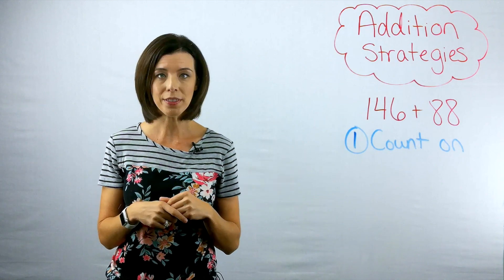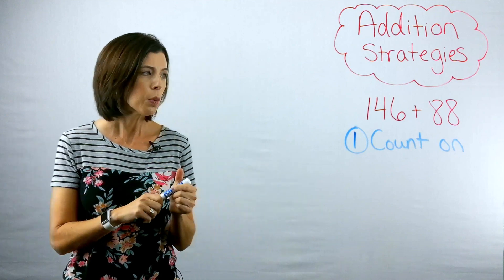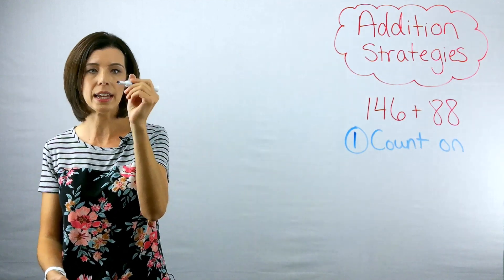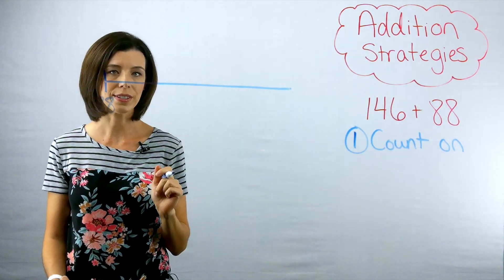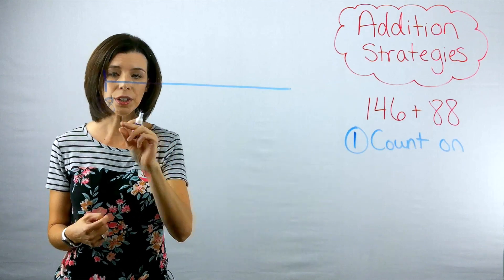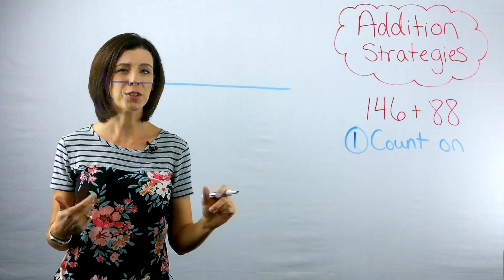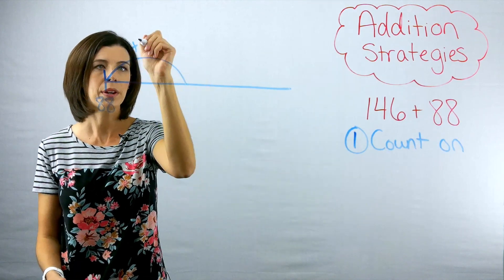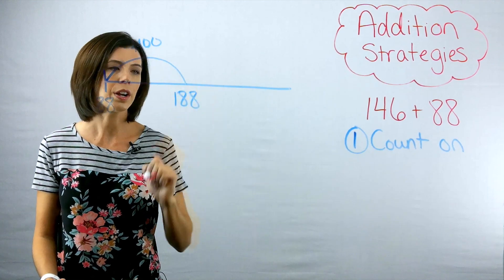Let me show you the count on strategy for 146 plus 88. We're going to start with either number. In my case, I'm going to start with 88, and I know that I need to count on 146. I can do this a couple of different ways. I could get to a friendly number and think of it that way. I have 100, so I'm going to easily add that on — adding 100 — so now I'm up to 188.